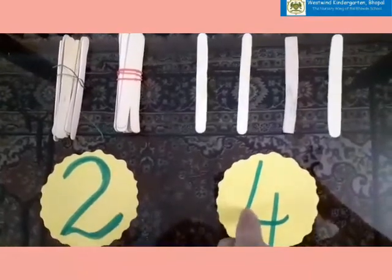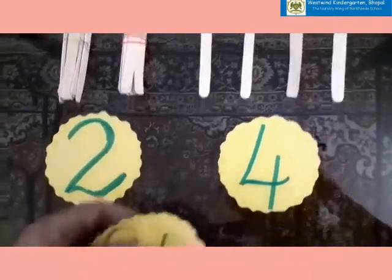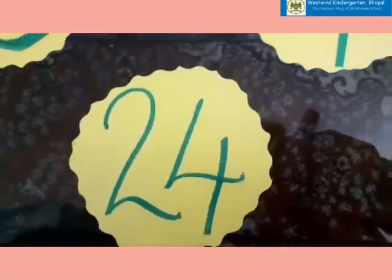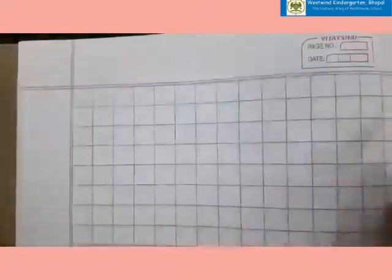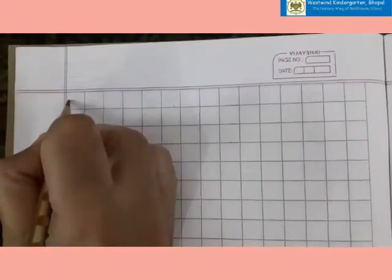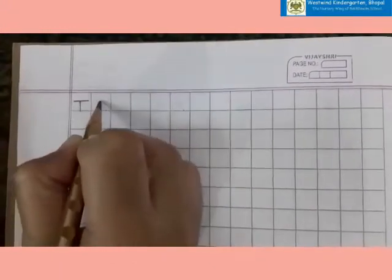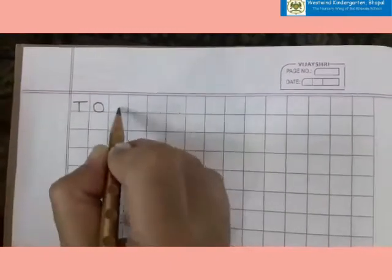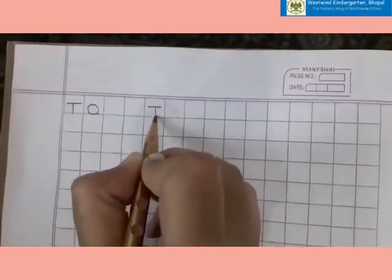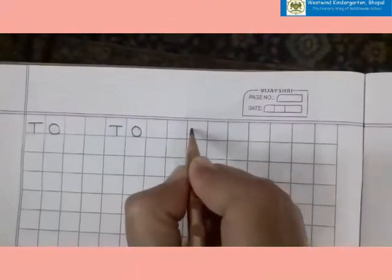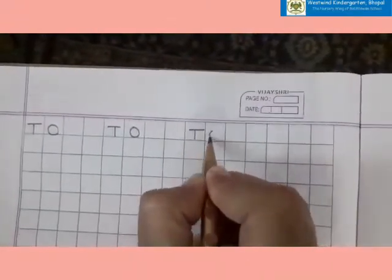So which number have we formed today? 24. Which number? 24. This is your math notebook. Open a new page, mention the date over here in this corner. Now we will write number 24, but before writing we will write T and O, the two words T, O.